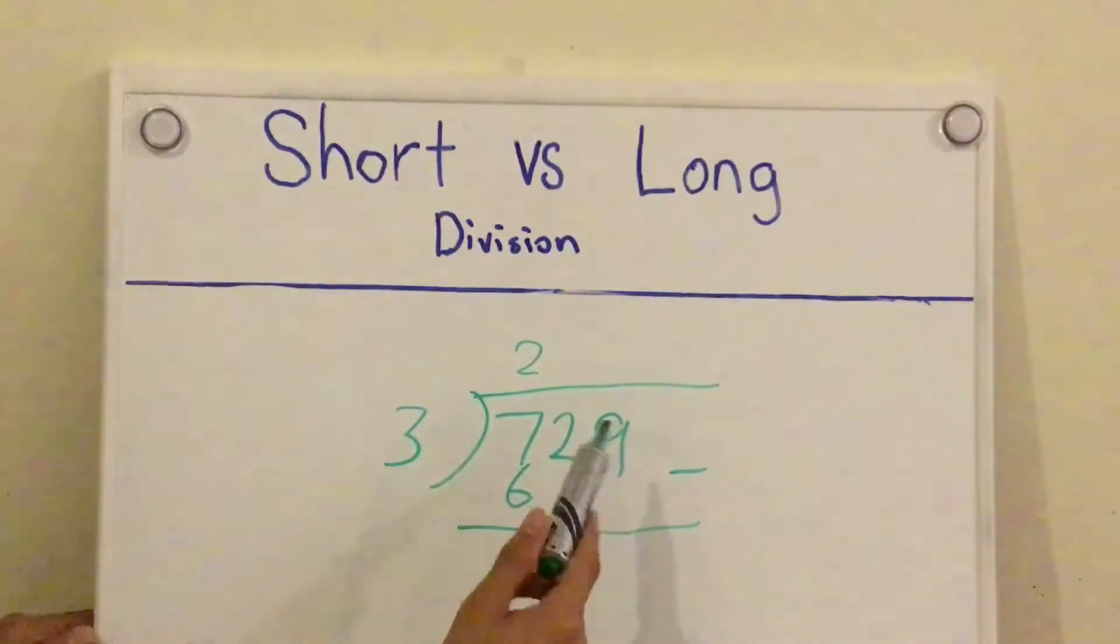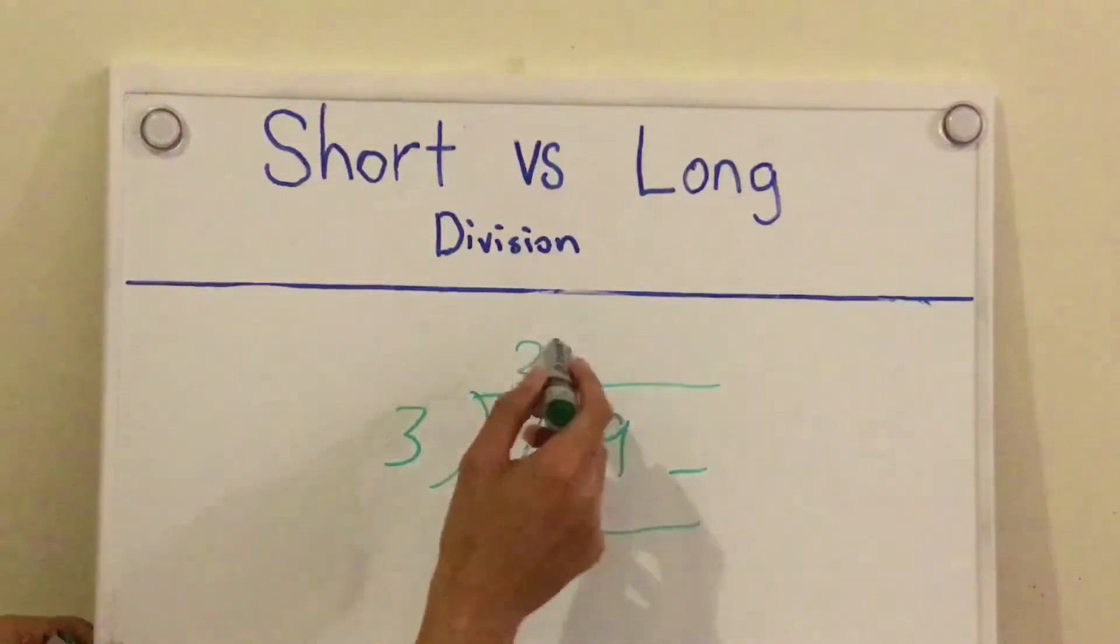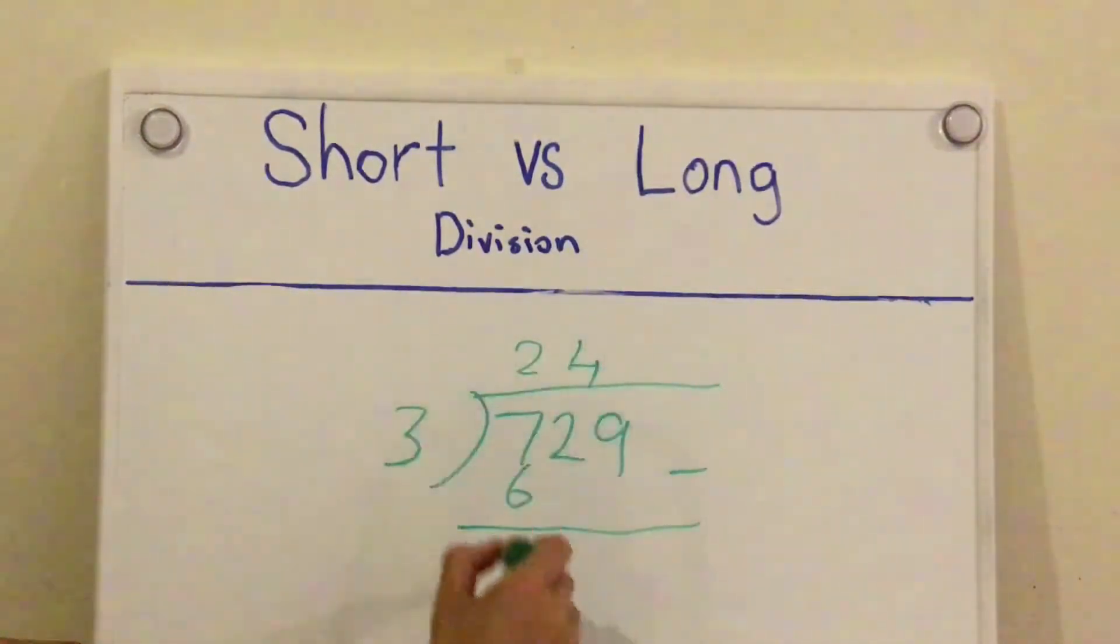So you might be thinking, let's just go 9 minus nothing. Well, you can, but I recommend you to go step by step. So if you make it to a point when you can divide by the divisor, do it. So 12 divided by 3 is 4. 4 times 3 is 12. Subtract, so you get to this point.